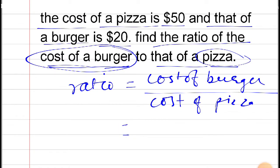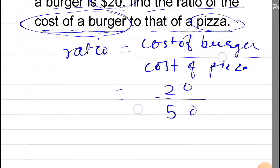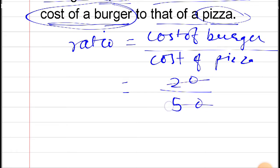Since the cost of burger is $20, you can write 20, and the cost of pizza is 50. We just need to find the ratio. You can divide both by 10.